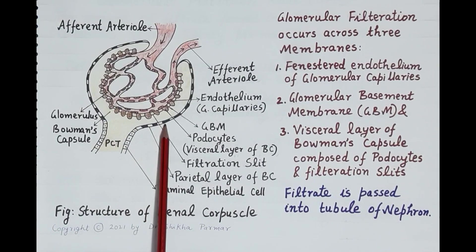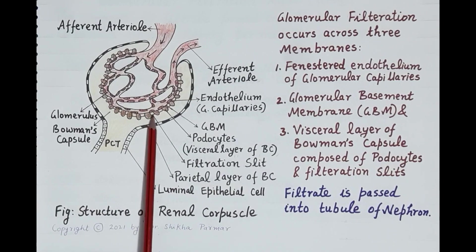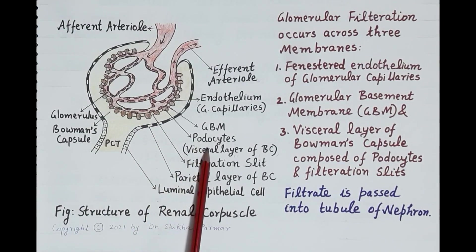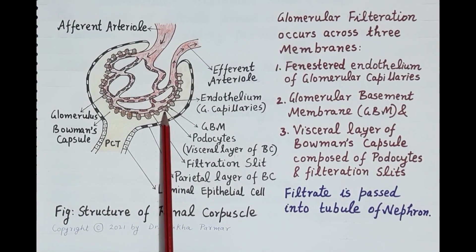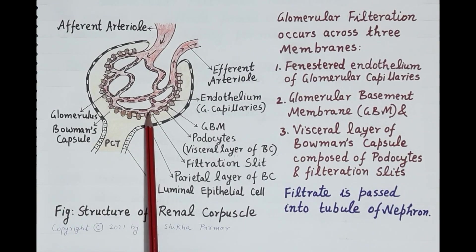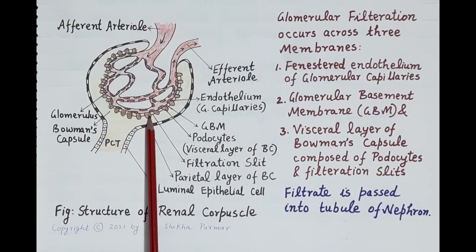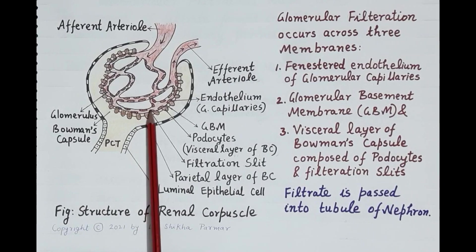Bowman's capsule has two layers: the outermost layer is called the parietal layer, and the inner layer is called the visceral layer. This visceral layer is made up of specialized cells called podocytes. In between the podocytes are present spaces termed as filtration slits. The blood in the glomerulus is filtered through the glomerular endothelium, then the basement membrane, and the visceral layer of Bowman's capsule. These three layers constitute the filtration unit of the nephron.